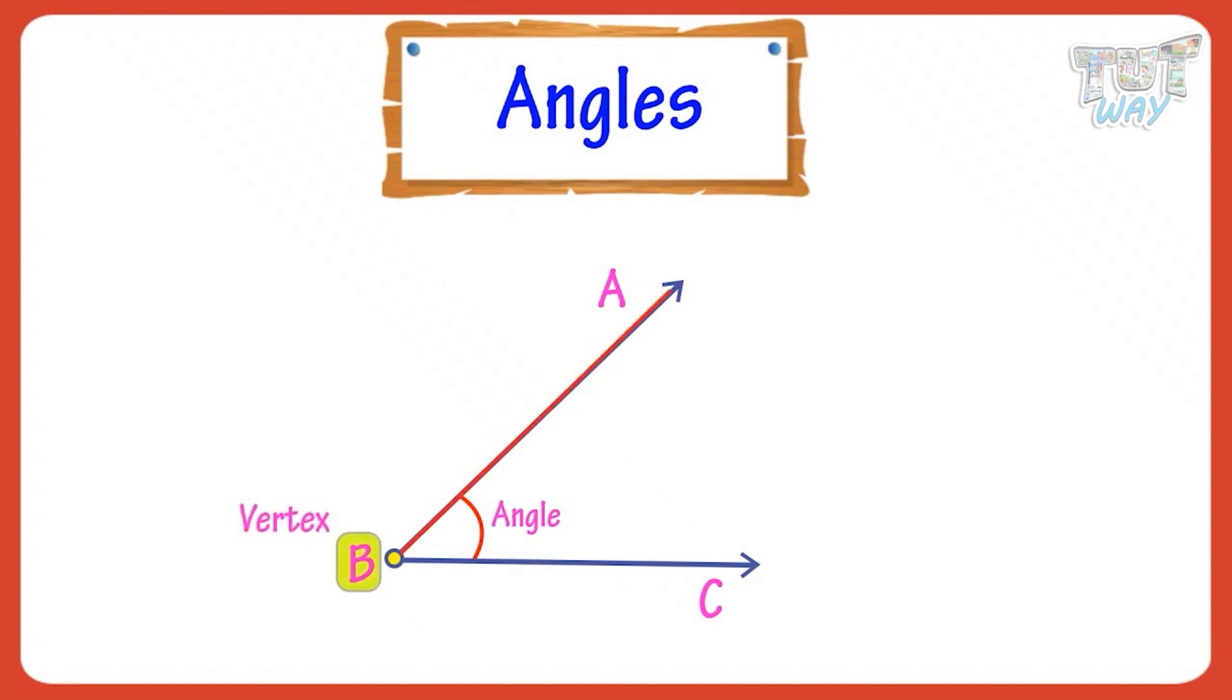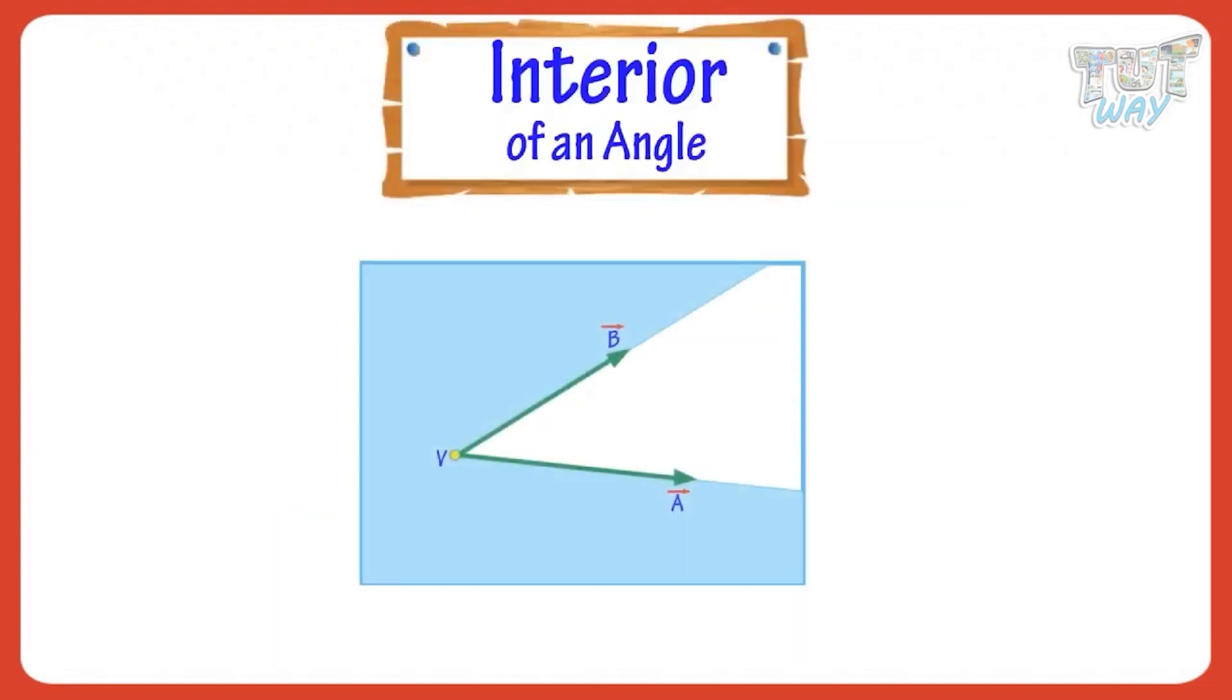AB and BC are legs of the angle. It is the space between two straight lines.